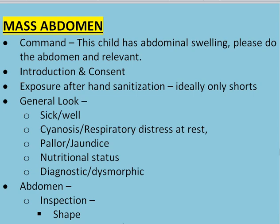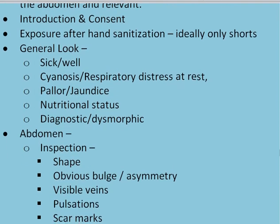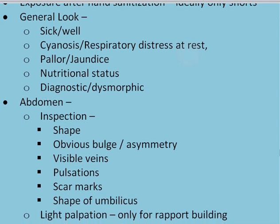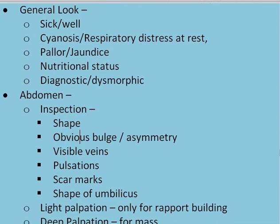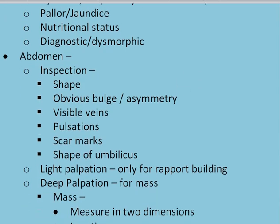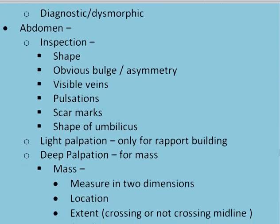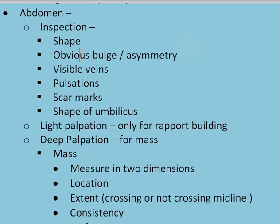After introduction and consent, expose the patient after hand sanitization — ideally in shorts, as in normal cases. You have to see the general look; it should be the same five or six things like sick or well-looking, cyanosis or respiratory distress at rest, pallor or jaundice, nutritional status, and diagnostic or dysmorphic features. Start with the abdomen — begin with inspection: see the shape, obvious bulge or asymmetry, visible veins, pulsations, scar marks, shape of umbilicus. Then light palpation is done for warming up and gaining confidence of the patient.